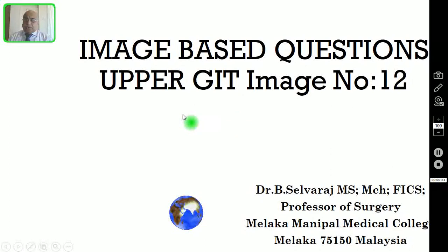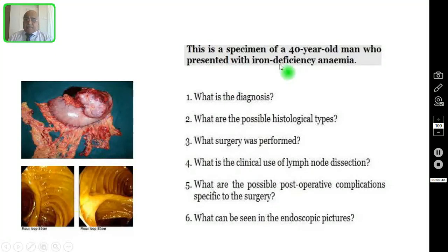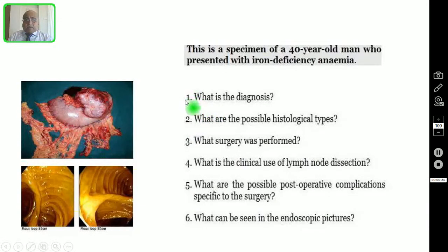In this video, I am going to talk about one more image-based question on the upper GI tract. This is a specimen of a 40-year-old man who presented with iron deficiency anemia. These are the three pictures. Question number one: what is the diagnosis?